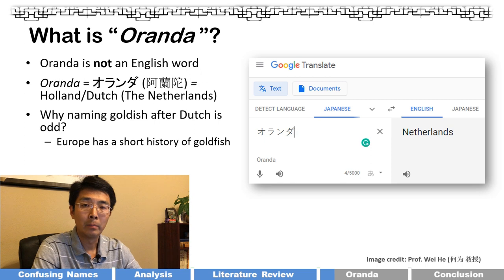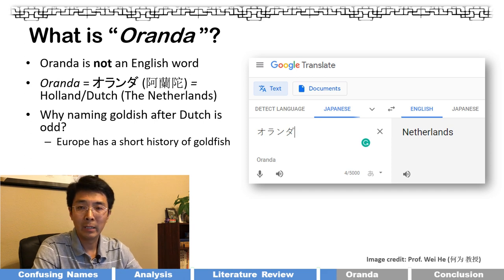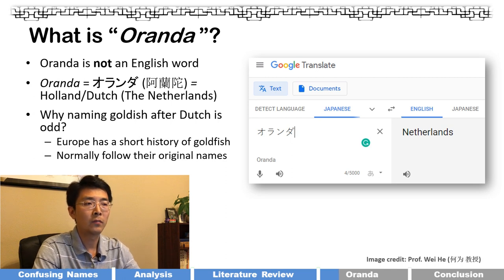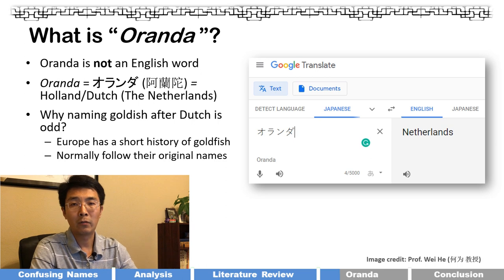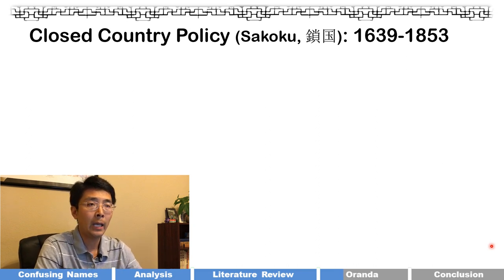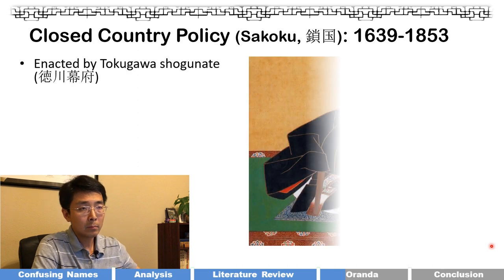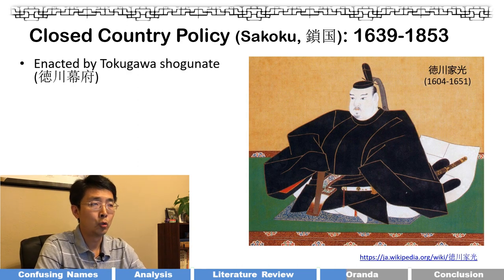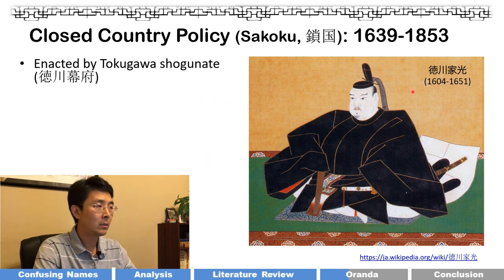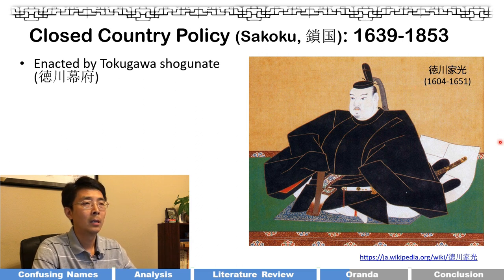Doesn't it seem odd that a Dutch name was given to a goldfish? There are two reasons it seems odd: first, Europe has a short goldfish history — outside of the Bristol Shubunkin, Europe has never been a birthplace for any goldfish variety. Second, normally European countries just follow the original name from Japan or China. So what is the historical background for this unusual naming?